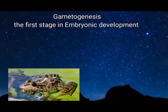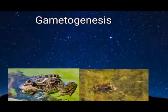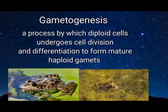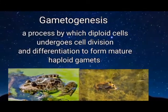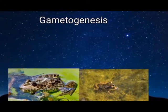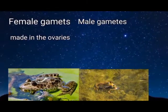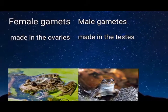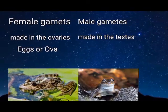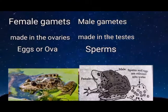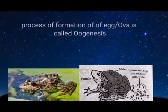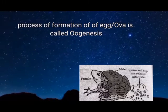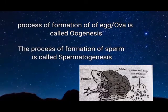The very first stage in embryonic development is gametogenesis — the process by which diploid cells undergo cell division and differentiation to form mature haploid gametes. Female gametes are made in the ovaries whereas male gametes are made in the testes. Female gametes are called eggs or ova, and male gametes are called sperm. The formation of eggs is called oogenesis and the formation of sperm is called spermatogenesis.